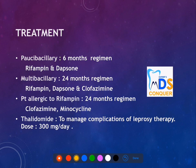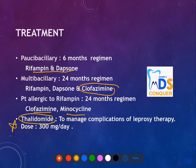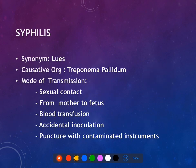For leprosy treatment, the most commonly used drugs are rifampicin and dapsone. In multibacillary leprosy, clofazimine is added. If patients are allergic to rifampicin, clofazimine and minocycline are given. Thalidomide is important as it is used in the management of complications of leprosy therapy.